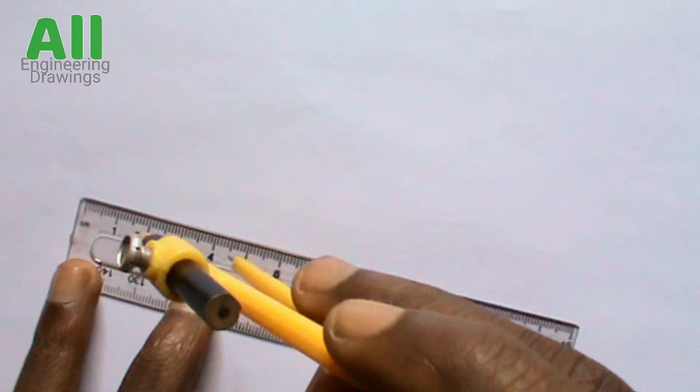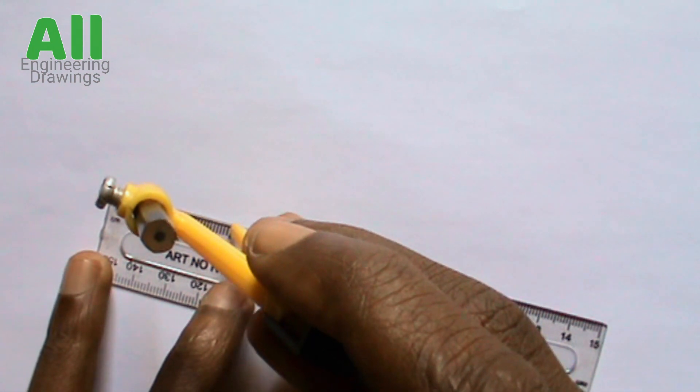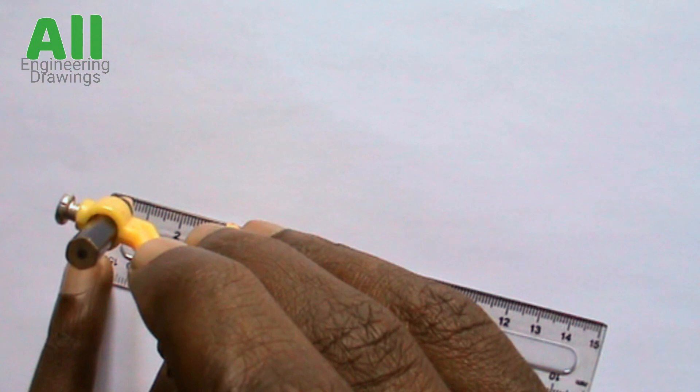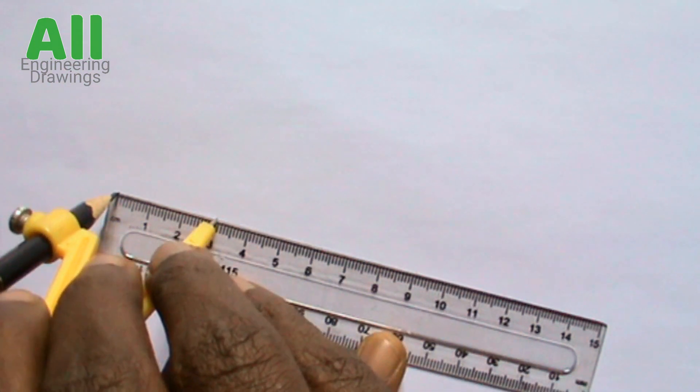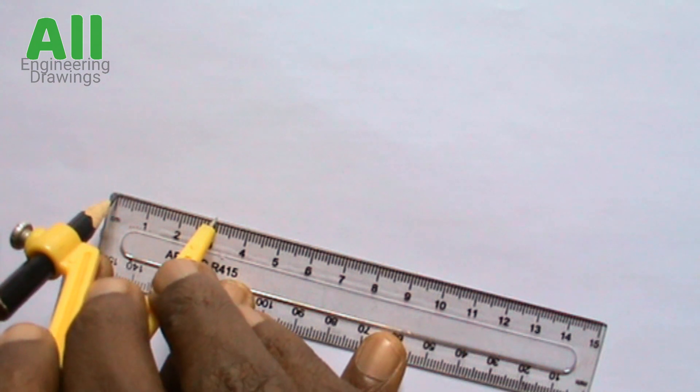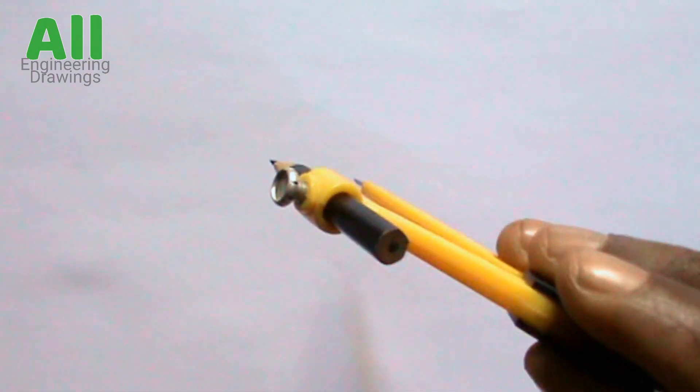To draw an arc, you are to use your compass to take the radius of the arc from your ruler. You can now draw your arc.